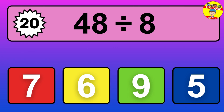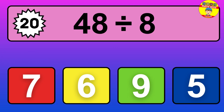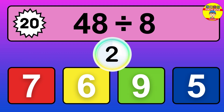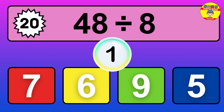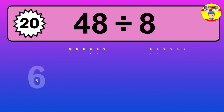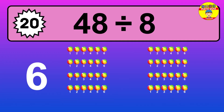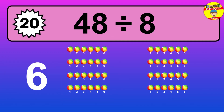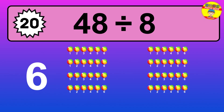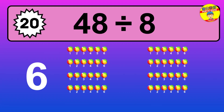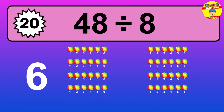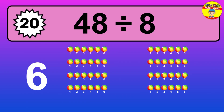48 divided by 8 — it's time to think. Let's go to the solution. Divide the number 48 by 8. Each group contains 8 units, so dividing 48 by 8 results in 6 equal groups. Thus, the result is 48 divided by 8 equals 6.